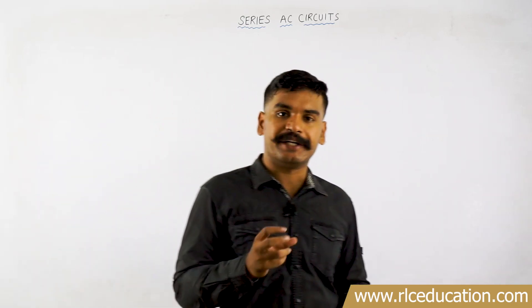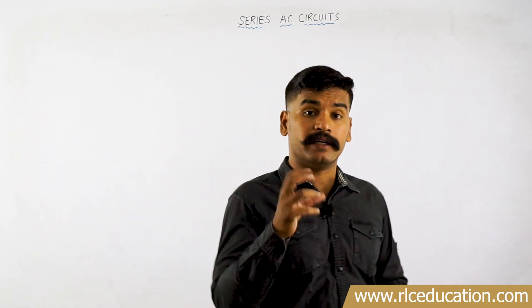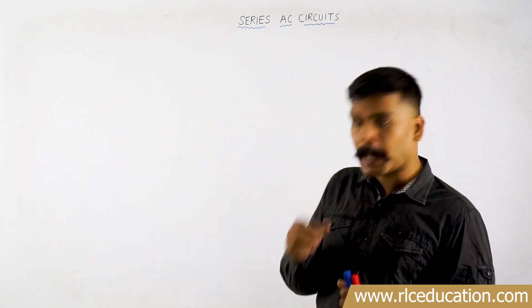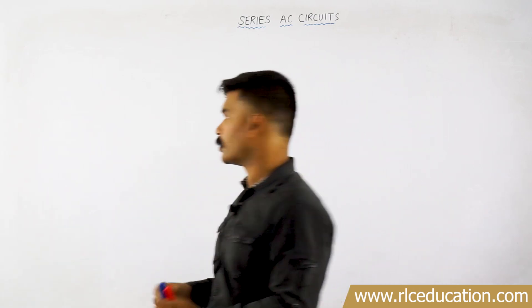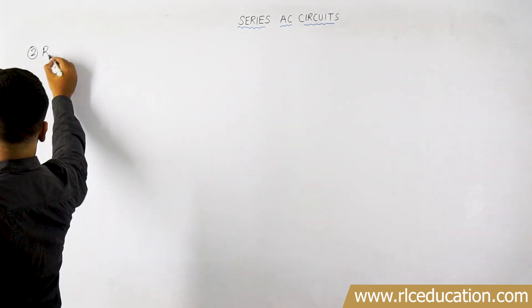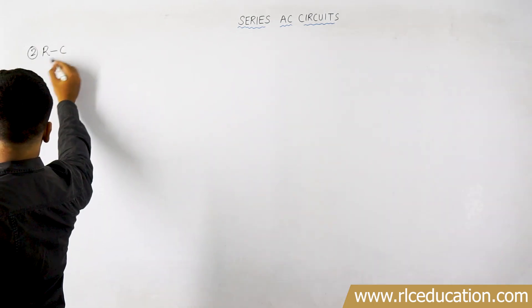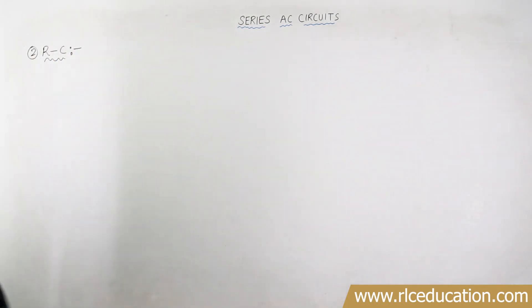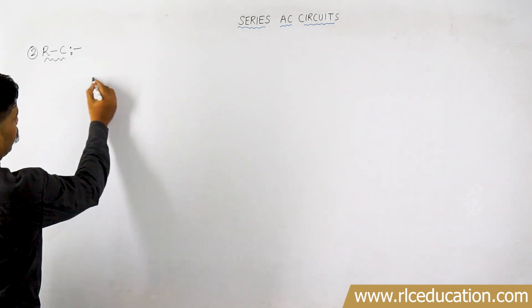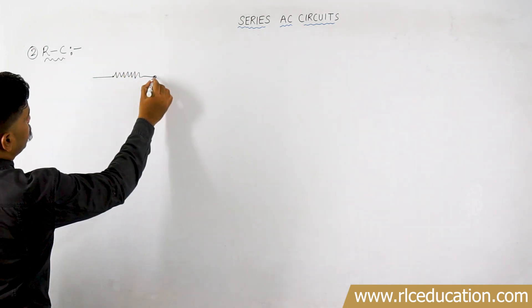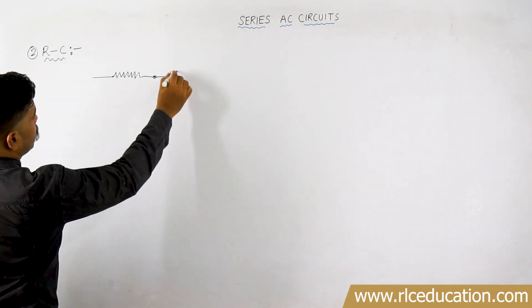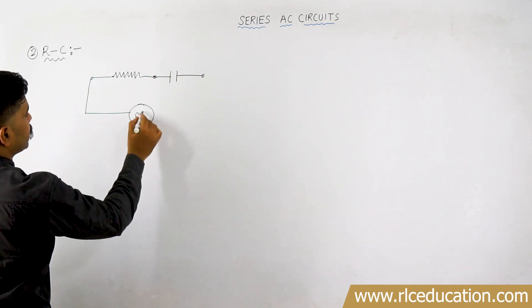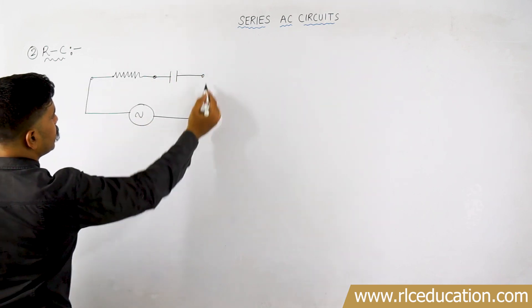In this video I am basically interested in discussing about the series AC circuit called the RC series combination. A resistor and a capacitor connected in series. So let me draw the circuit diagram. You have a resistor connected in series with a capacitor, and you are connecting this entire combination with a single phase AC source.